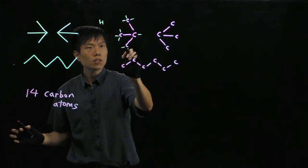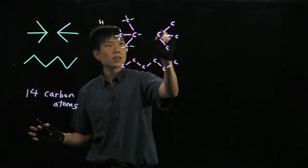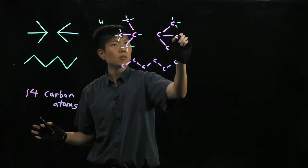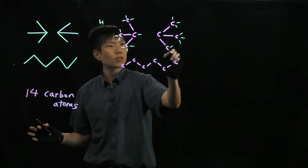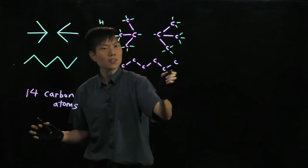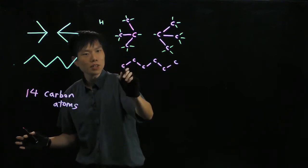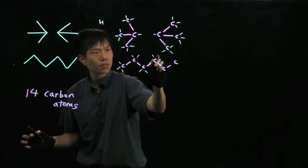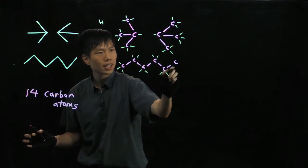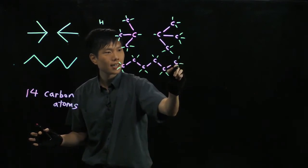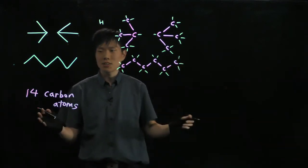Continuing to count the hydrogens on each carbon: 1, 2, 3 — here — 1, 2, 3 — 1, 2, 3 — 1, 2, 3 — 1, 2, 3 — and this one here. And for the bottom: 1, 2, 3 — 1, 2, 3, 4 — 1, 2, 3, 4 — 1, 2 — 6, 7, 8, 9, 10, 11.